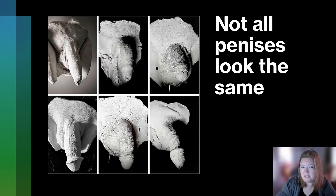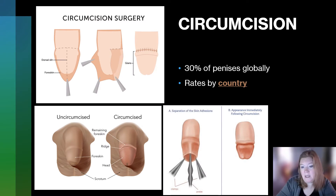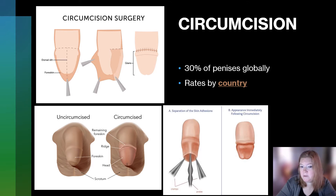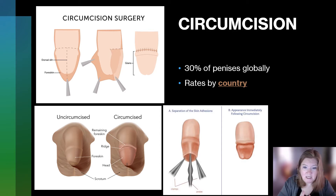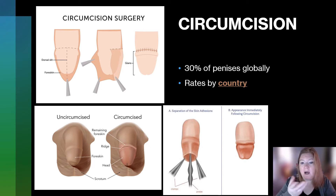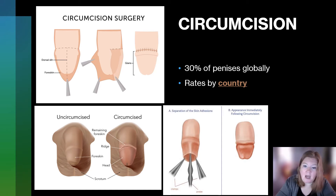Not all penises look the same. Circumcision is one way that not all penises look the same. This is a surgery often done on newborns, but it can be done at any age, and what happens is the foreskin is removed. If the foreskin is not removed, around age five the foreskin is able to be retracted — when cleaning, bathing, washing. There's very limited additional care for an uncircumcised penis, and worldwide about 30% of penises are circumcised.